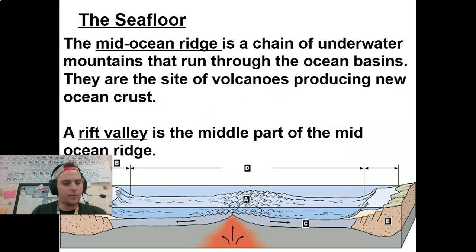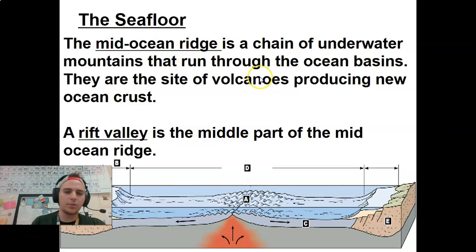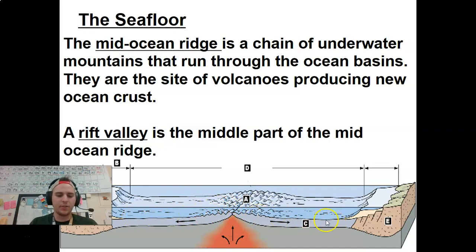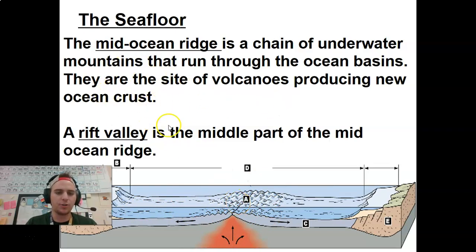A mid-ocean ridge — we've talked about the mid-Atlantic ridge a little bit during volcanoes. This is a chain of underwater mountains that runs through the ocean basins, the site of volcanoes producing new ocean crust. The magma comes up and the lithospheric plates are diverging from one another on either side. These underwater mountains form because the magma comes up underneath them, producing new ocean crust.